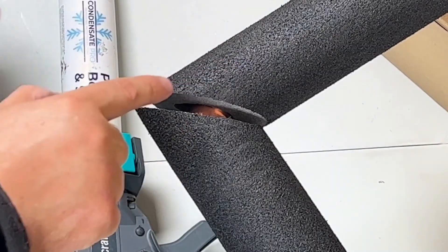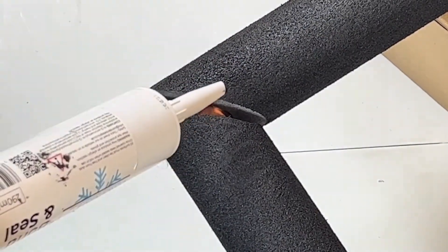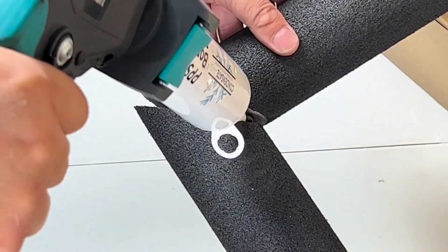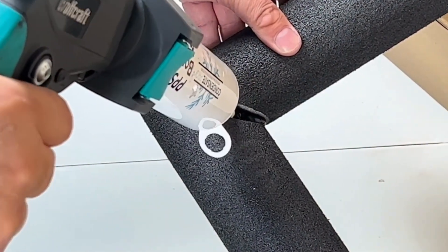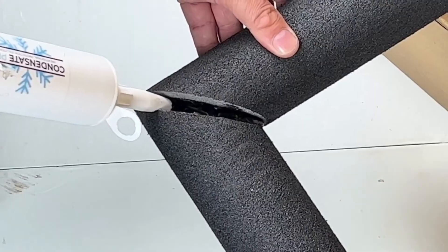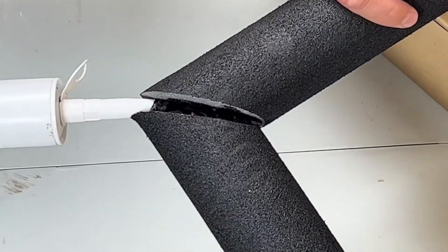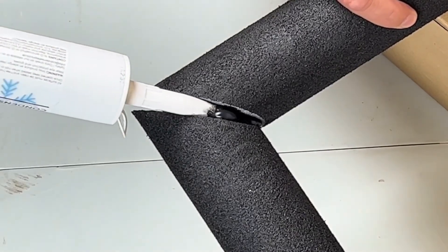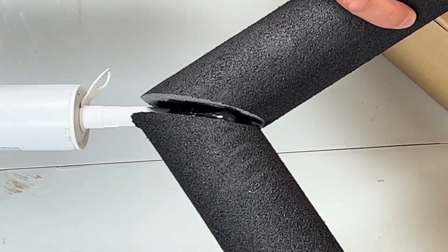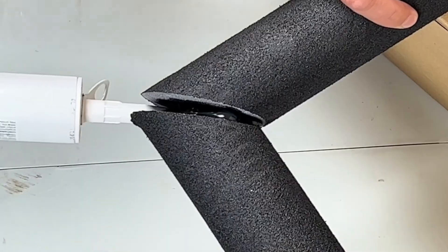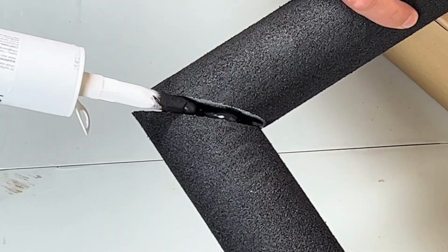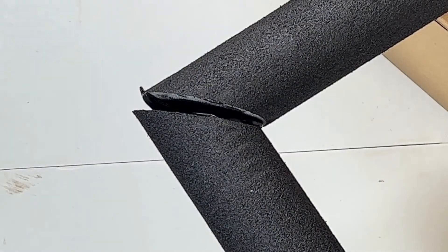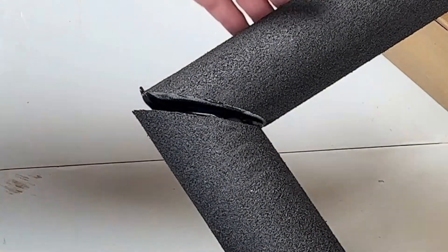When sealing the joints, what you want to do is you want to get as much under the seal - be really liberal with it. Get plenty in there. It doesn't matter if it goes onto the pipework. It's a lot easier when it's in situ, so put plenty into the gap. And then that's going to seal to the pipework as well. Push it together.